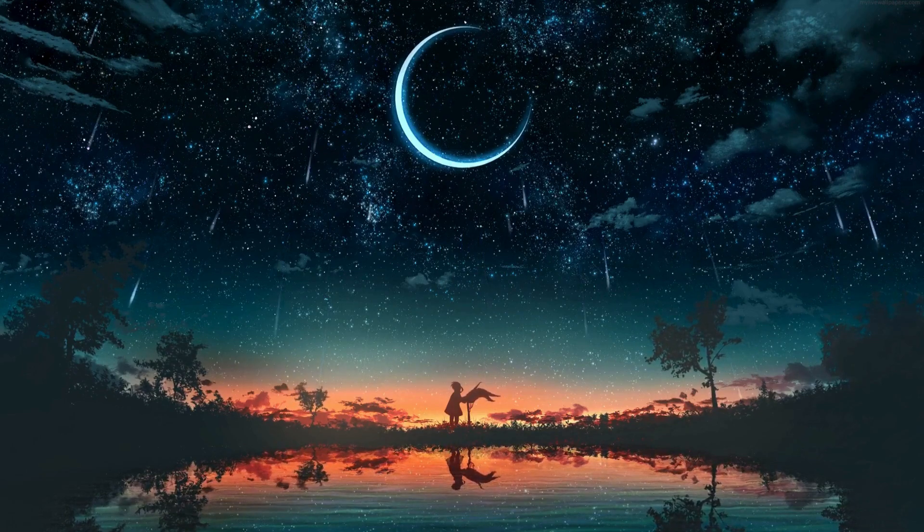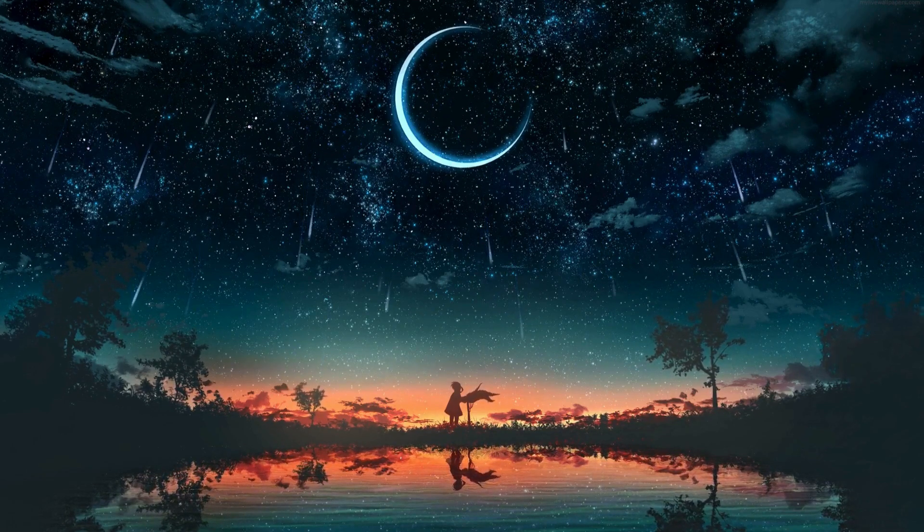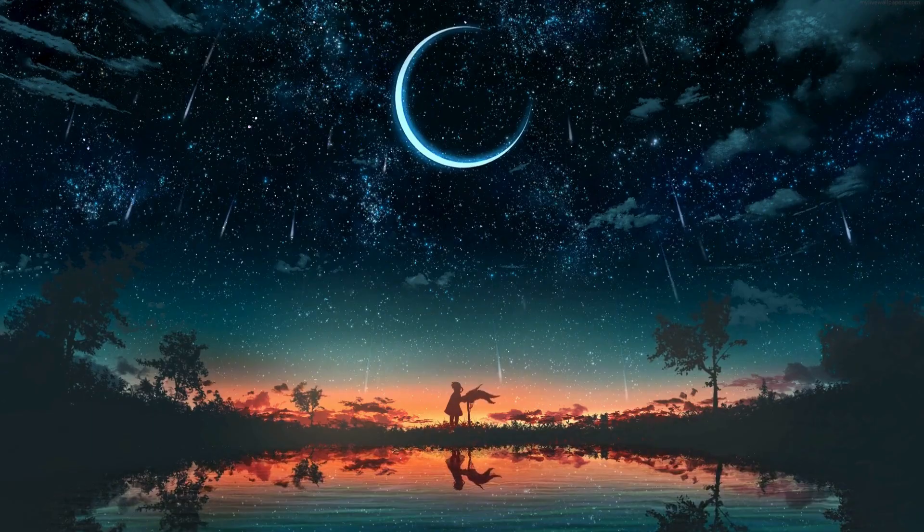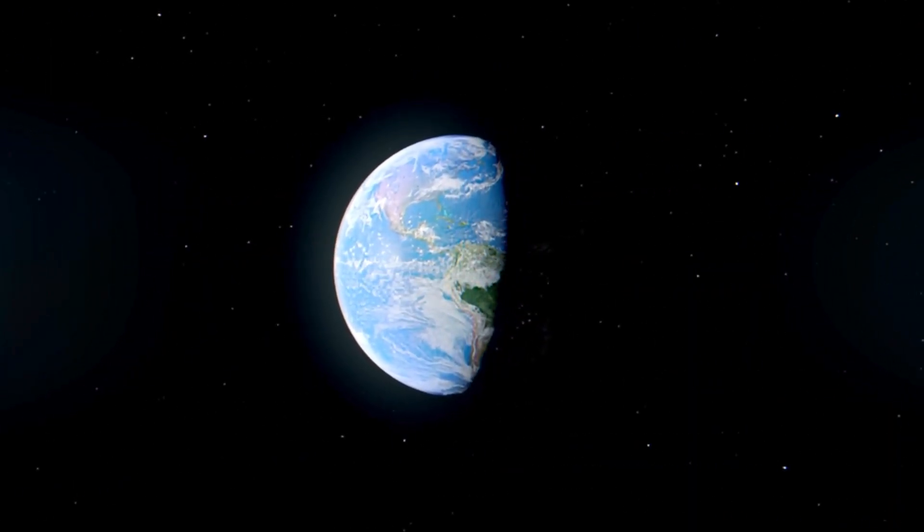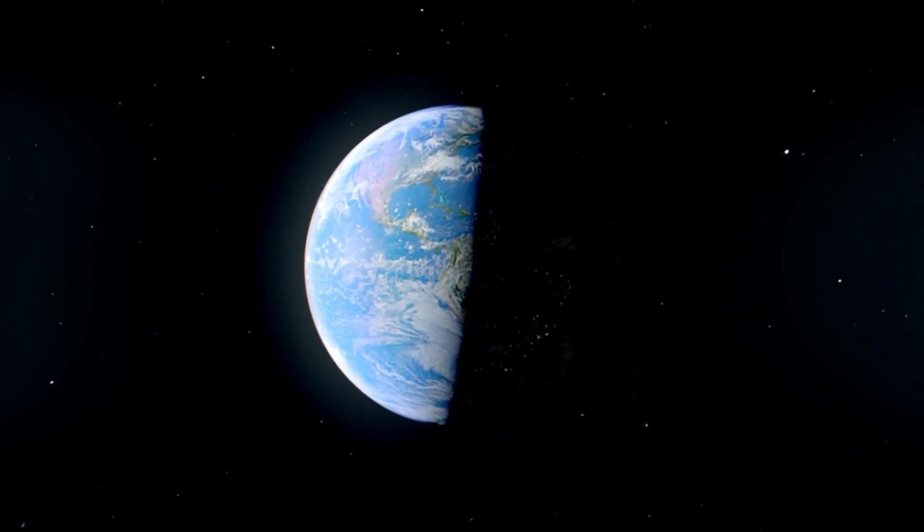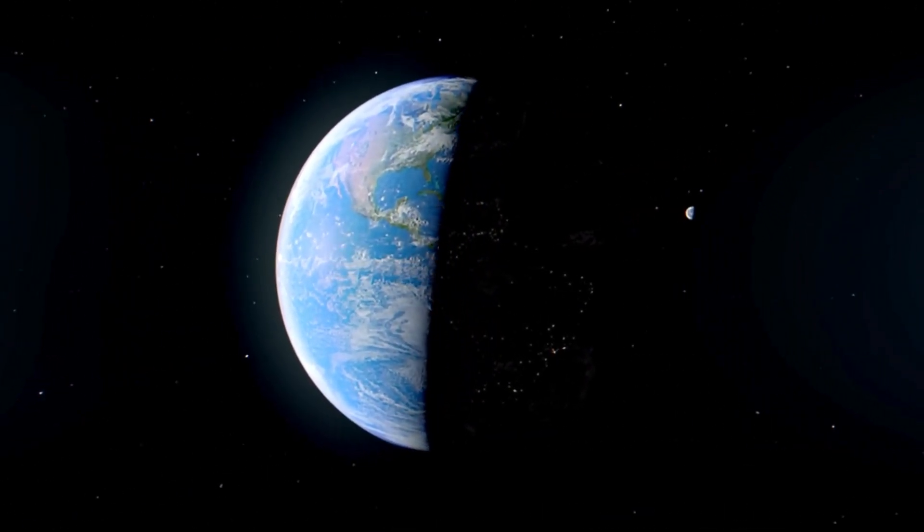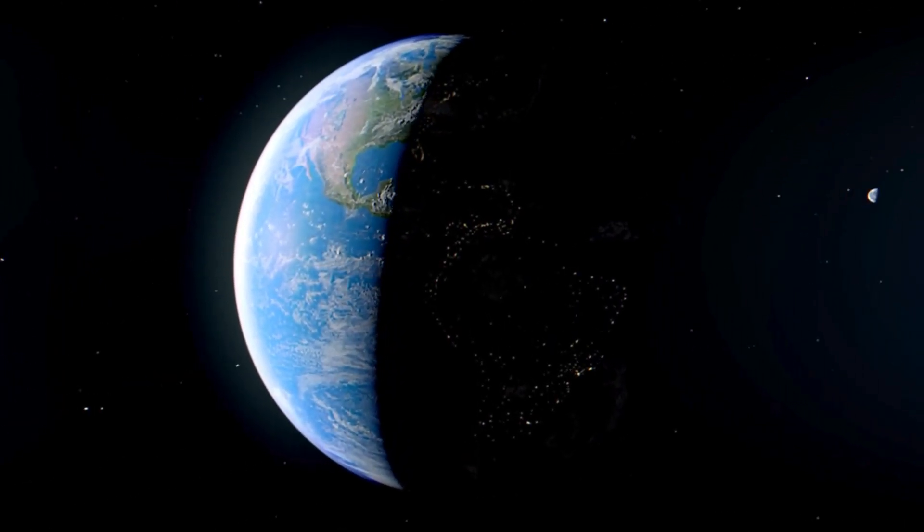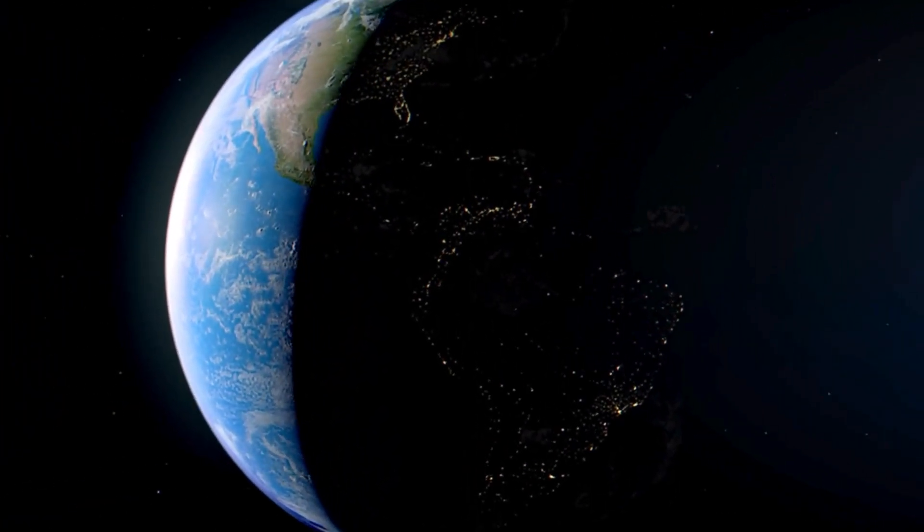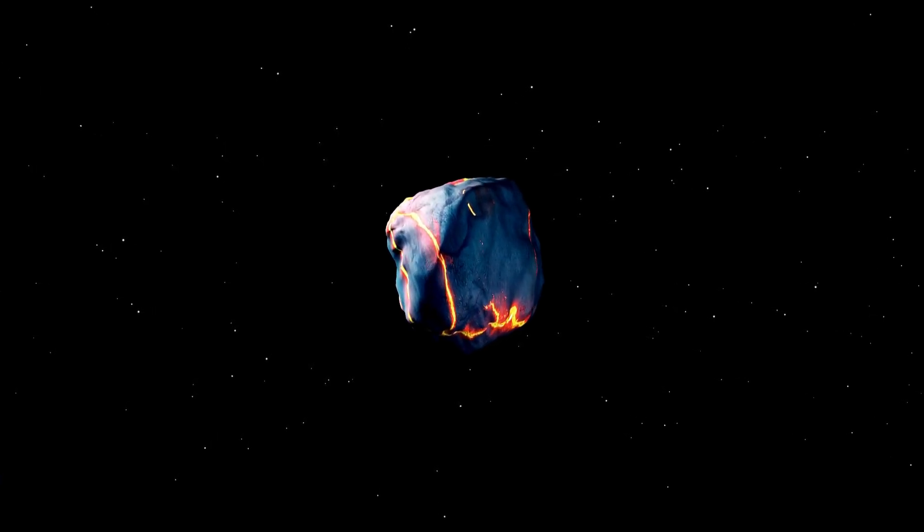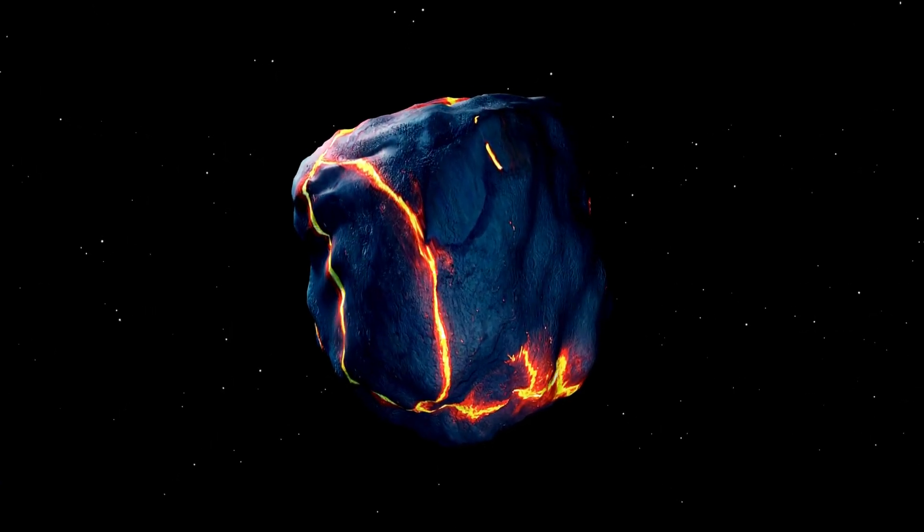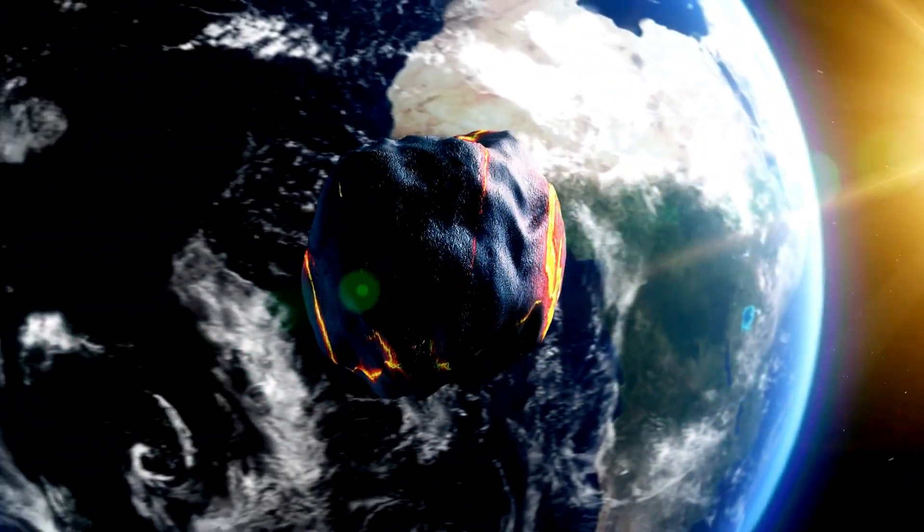The second theory, often referred to as the Snowball Earth Hypothesis, paints a picture of a planet entirely encased in ice. This global glaciation event, thought to have occurred around 700 million years ago, would have created an inhospitable environment for life as we know it. The theory suggests that this icy period could account for the missing layer in Earth's geology, as life would have struggled to thrive in such frigid conditions.